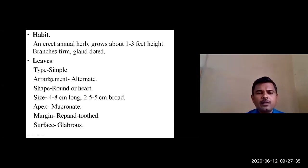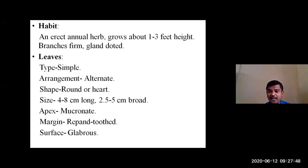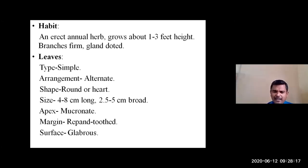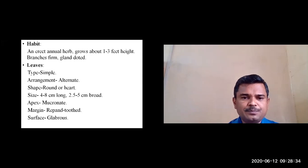Regarding leaves: the type is simple, arrangement is alternate, and shape is somewhat round or heart-shaped, or even broadly elliptic. The size of the lamina is around 4 to 8 centimeters in length and 2.5 to 5 centimeters broad. The apex is mucronate — a specific distinguishing character. The margin is toothed or dentate, meaning the margins of the lamina are dissected. The upper surface is glabrous in nature.